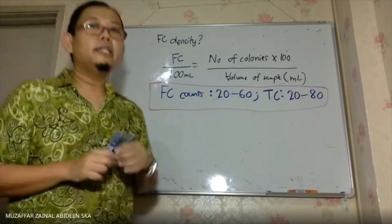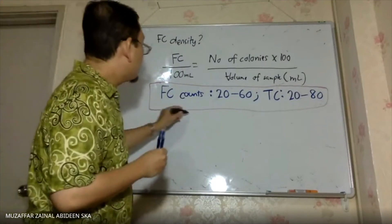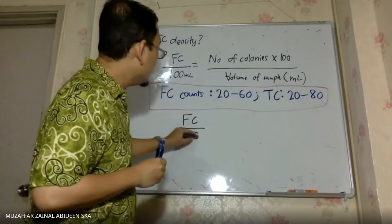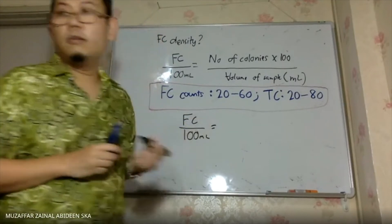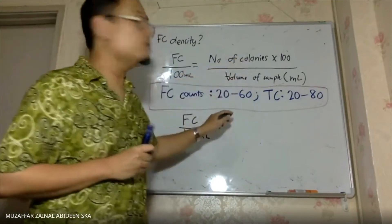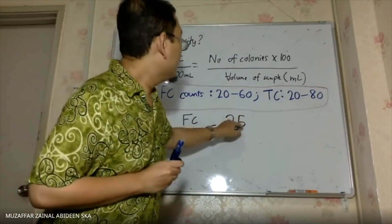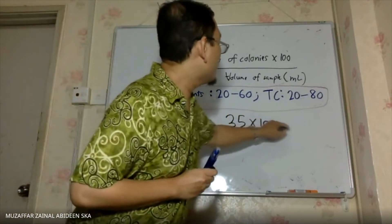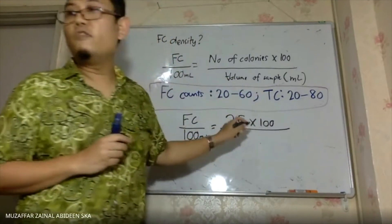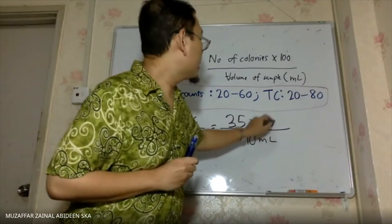Since we find that only one sample gives acceptable results, the 10 ml, we choose that result. So the number of colonies accepted is 35 times 100, that's from the formula, divided by the volume of sample. So the volume of sample accepted was 10 ml.